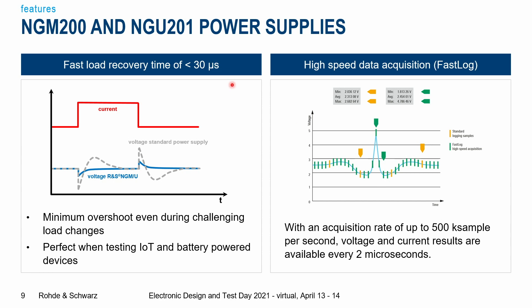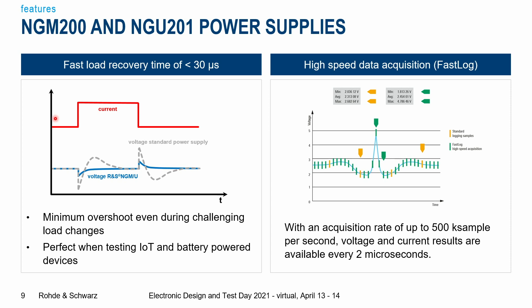Another really important factor is the load recovery time. The NGM and NGU power supplies offer a load recovery time of less than 30 microseconds, which is best in its class. When a cell phone or IoT device moves from sleep mode to receiving a call or text very rapidly, the current consumption jumps up suddenly. With a standard power supply, the voltage drops and then overshoots while trying to regulate, taking a long time to return to the set value. With the NGM and NGU, you only get a small drop with no overshoot, and after those less than 30 microseconds you are back to your set voltage.